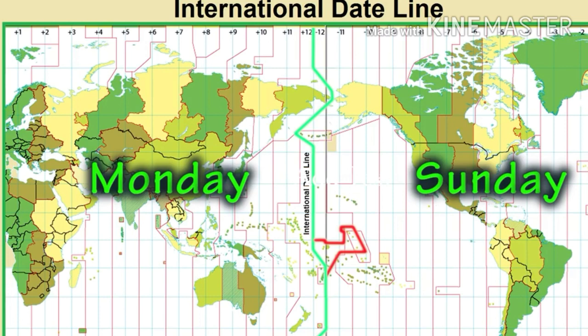The international date line is also called 180 degrees longitude and the anti-meridian. It is exactly opposite to the Greenwich line on the other side of the globe. When it is 12 noon on Sunday at 0 degrees longitude, it is midnight at the anti-meridian. Just to the west of 180 degrees, Monday is just beginning, while to its east, Sunday is just ending. When we cross the international date line moving west to east or east to west, the date changes.